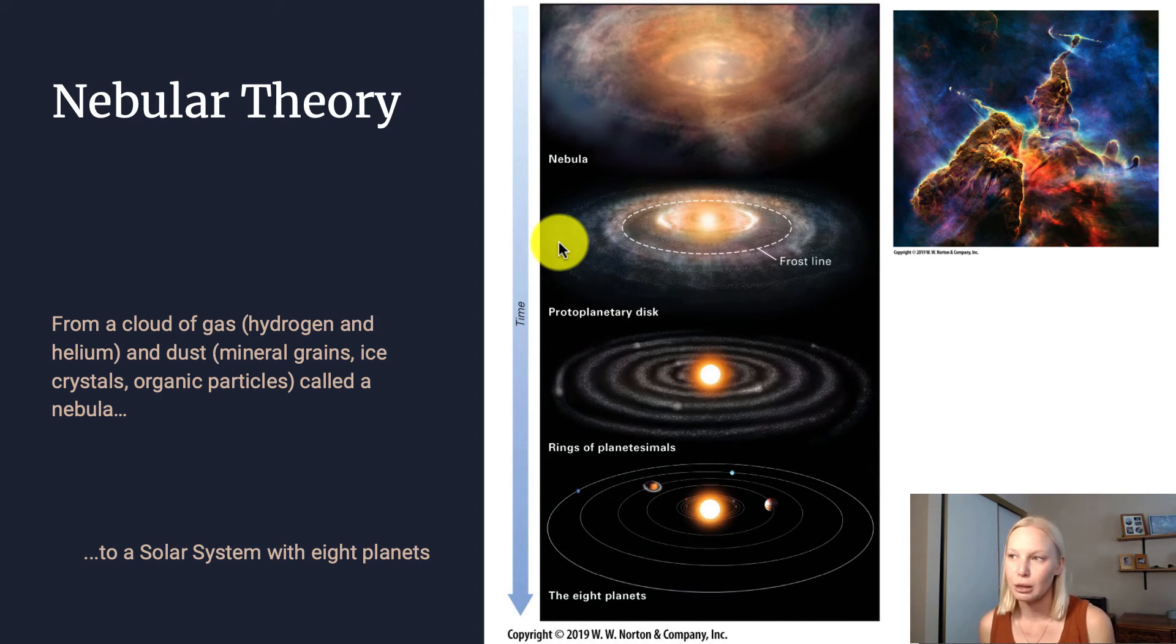And then it eventually flattens out into this disk. And this is happening because of gravity. The particles are wanting to cling to one another. They have a gravitational pull to one another, and ultimately, we have our planets forming.